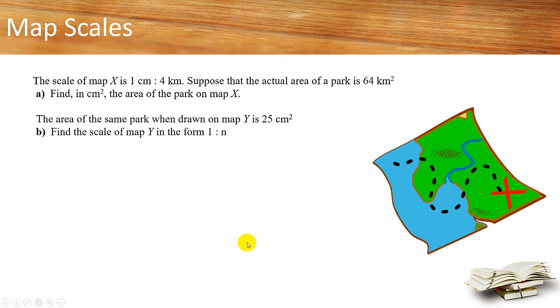Hi everyone, welcome to set 2 linear revision. Let's revise a question on map scales. The scale of map X is 1 cm to 4 km. Suppose that the actual area of a park is 64 km². For park A, find in cm² the area of the park on map X.